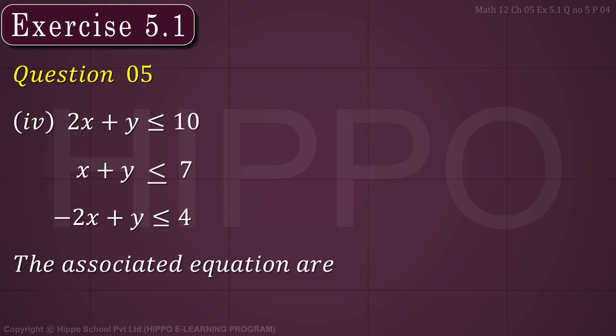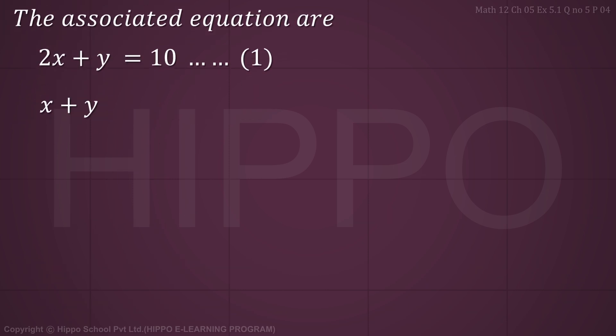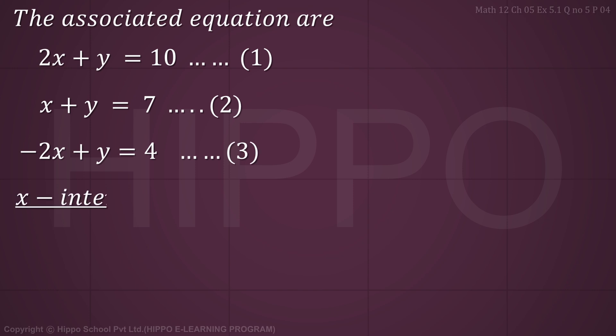The associated equations are: 2x plus y equals 10, which is equation number 1; x plus y equals 7, which is equation number 2; and minus 2x plus y equals 4, which is equation number 3.